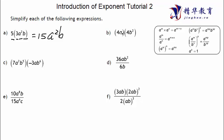This one: 4A times 4B squared. We just multiply them together — constant times constant, A terms times A terms, B terms times B terms. Four times four is 16. There's only one A term, so it stays as A. There's only one B term, so B squared stays B squared. Result: 16AB squared.